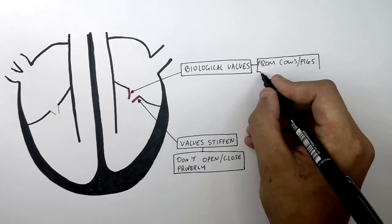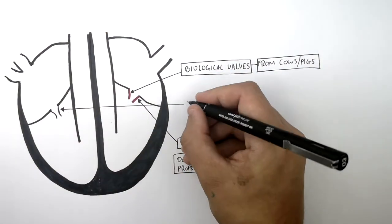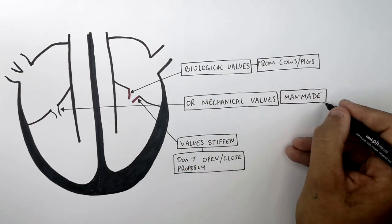But these can be rejected by the immune system. Or you can transplant mechanical valves. These are man-made, so won't be rejected by the immune system.